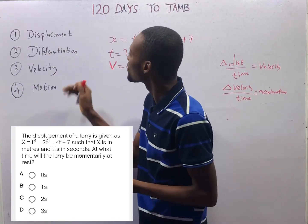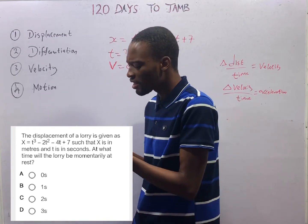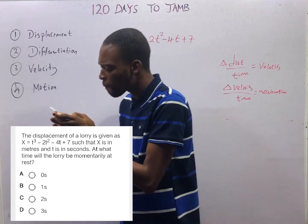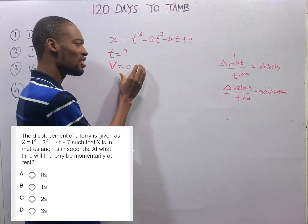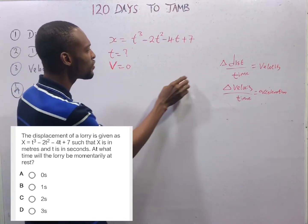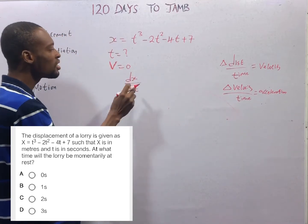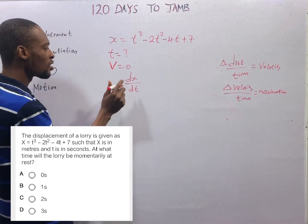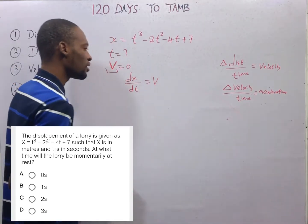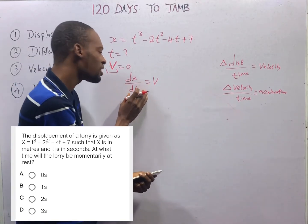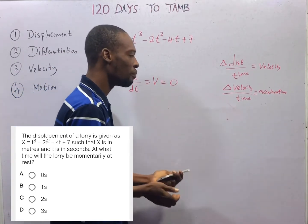This takes us to differentiation. This question requires wisdom — it says at what time will the lorry be at rest? The lorry will be at rest when velocity is zero. To get velocity from displacement, we differentiate displacement, which is ds/dt. It simply means differentiate displacement with respect to time. So velocity equals ds/dt, and if the lorry is at rest, after differentiating, the velocity must equal zero.